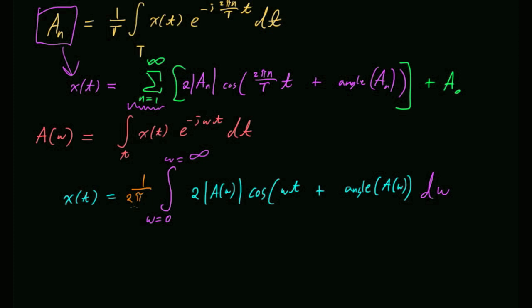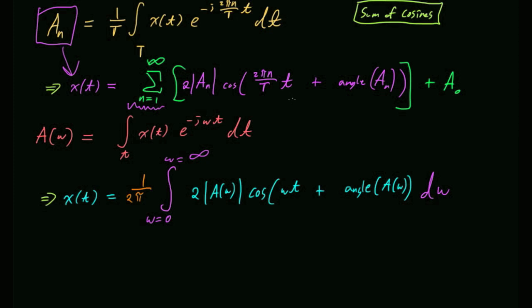All the Fourier transform tells us is how much you have of each cosine — how much amplitude and how much phase you have. At the end of the day, it's saying this signal can be built as a sum of cosines: tell me the frequencies and how much, and that's what the A term tells you. The reason we care so much about cosines is that they have this magical property: when you stick them into a circuit, what comes out the other end is also a cosine at the same frequency. No other signal has that property.